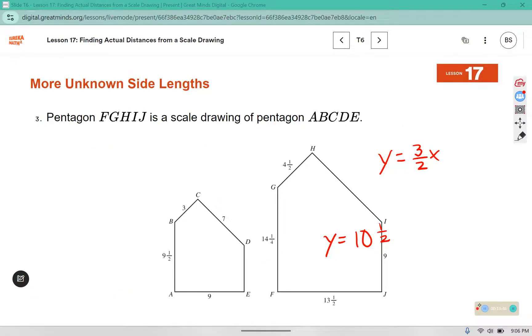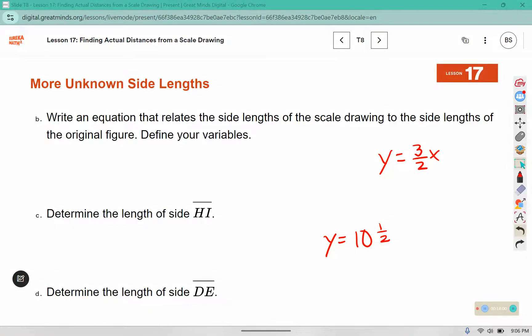Now our job is to determine the side length for DE. DE is from the original, so this is the x value that we're looking for. The new version or the scale drawing version, that y value is 9, so it's going to go in the y position of our equation. So it will say 9 equals 3 over 2 x. X is being multiplied by 3 over 2, but I'm trying to solve for x.